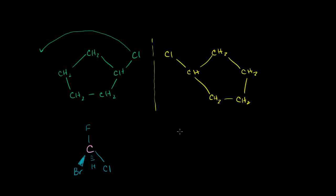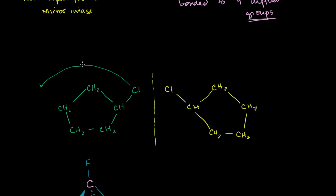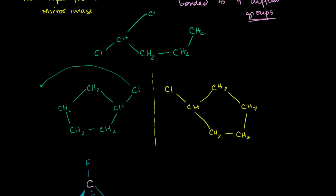If I were to rotate this, I would get a CH with the chlorine, and then the CH2 groups completing the ring. The only difference between the rotated version and the original is just how we drew one bond — I could draw it facing up instead. These are the exact same molecule. So this molecule is also not chiral.